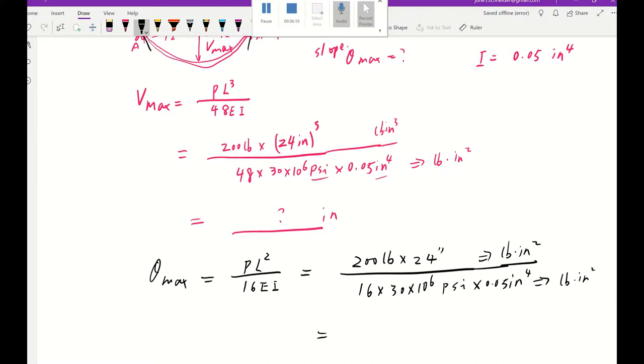So they cancel out. There will be no unit. That's what we expected because it's a slope. And if I do a quick calculation, the answer is about 4.9 times 10 to negative 3.